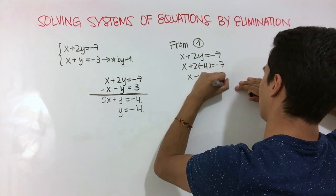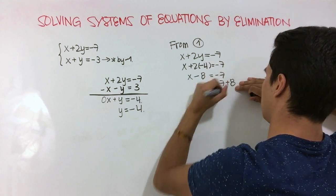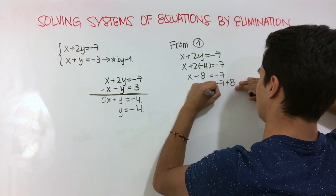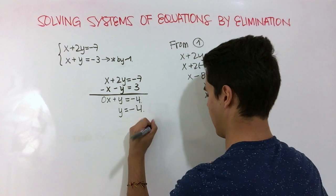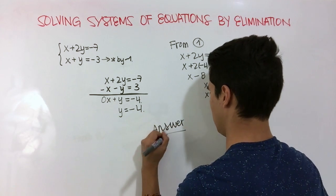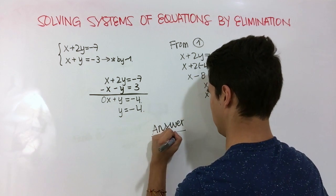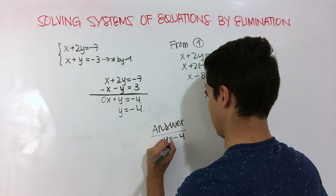x is equal to negative 7 plus 8. So x is equal to 1. So our answer would be y is equal to negative 4 and x is equal to 1.